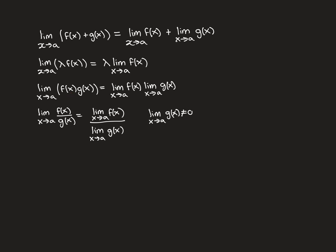The third result is that if you create a new function by multiplying f(x) and g(x) together and ask what is the limit as x approaches a of f(x) times g(x), that equals the limit as x approaches a of f(x) times the limit as x approaches a of g(x).